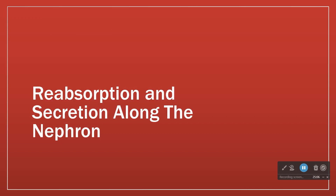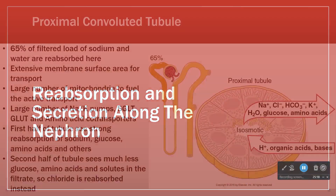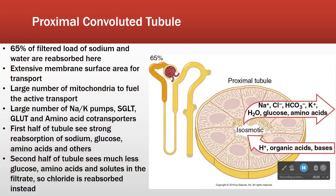Those are the big concepts — how do these molecules move. This next bit is like a tour: we're going to look at the different sections of the nephron and see how these processes play out differently in the different parts, because they do. The different parts of the nephron, while they have a lot of similarities, do different things.